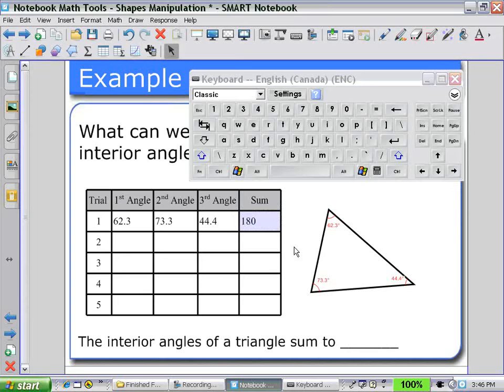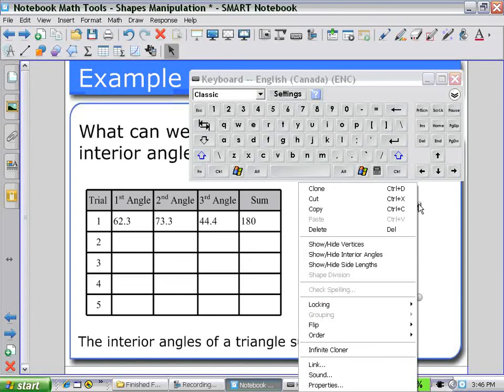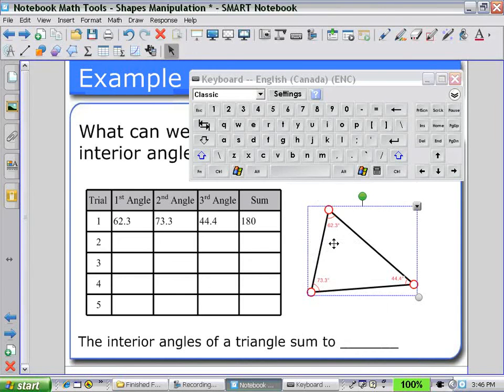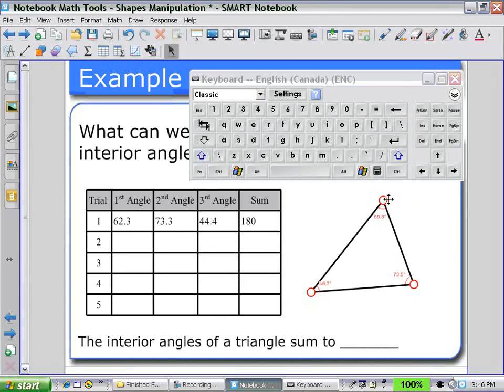Again, using the arrow pull down menu, show and hide the vertices. Drag a vertex to change its shape. Notice that the angles recalculate, and then the students can enter the new value into the table.